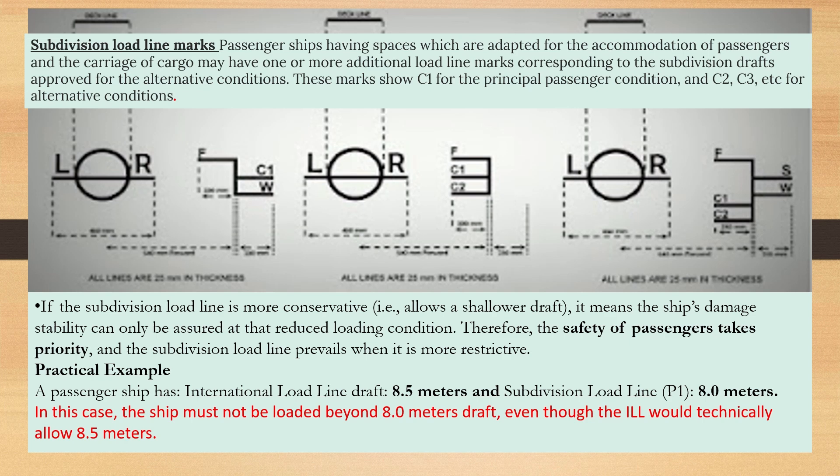Subdivision Load Line Marks: Passenger ships having spaces adapted for the accommodation of passengers and the carriage of cargo may have one or more additional load line marks corresponding to the subdivision drafts approved for alternative conditions. These marks show C1 for the principal passenger condition and C2 etc. for alternative conditions. If the subdivision load line is more conservative, it means the ship's damage stability can only be assured at that reduced loading condition, and therefore the safety of passengers takes priority — the subdivision load line prevails when it is more restrictive.